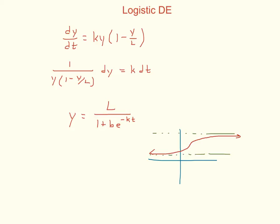When I separate the variables in this differential equation, I get something that requires a technique called partial fraction decomposition to solve — a Calculus 2 topic. Using partial fraction decomposition and then integrating, the solution is y equals L over (1 + b·e^(−kt)). Here L and k come from the equation, and b is a constant like the C's we've been using, found from the initial condition.